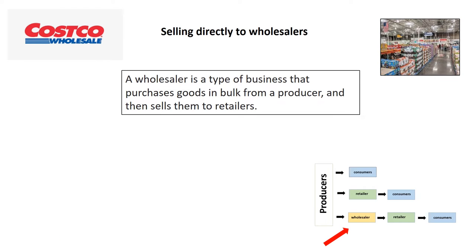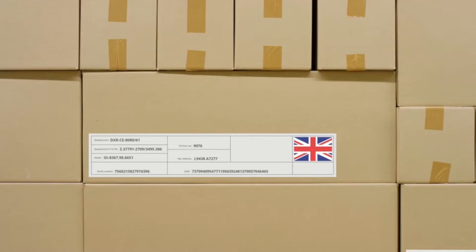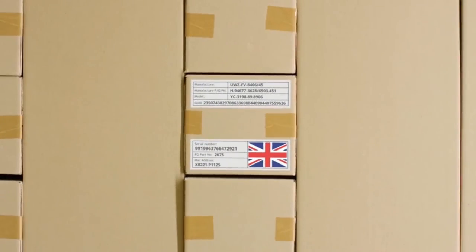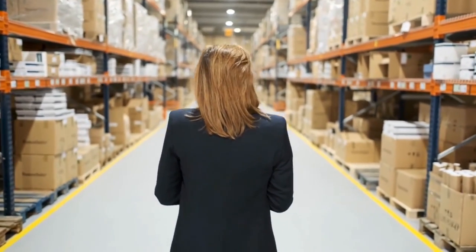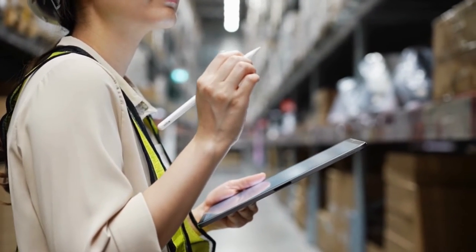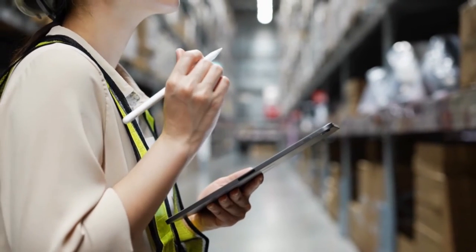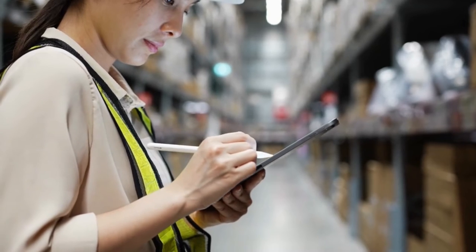When producers sell directly to wholesalers, this can help distribute their goods. A wholesaler is a type of business that purchases goods in bulk from a producer and then sells them to retailers. This distribution channel is good if producers make lots of a particular product, as they are able to sell in bulk. It means producers do not necessarily have to communicate a lot with the consumer directly, as the wholesaler already has customers, so products can reach lots of potential customers in a short space of time. It can also lower distribution costs, as the producer does not have to distribute to many different locations, and products may end up being sold in many different retail locations.